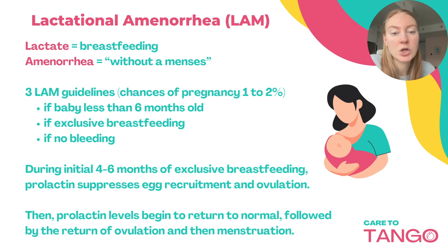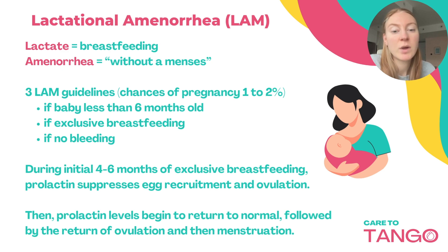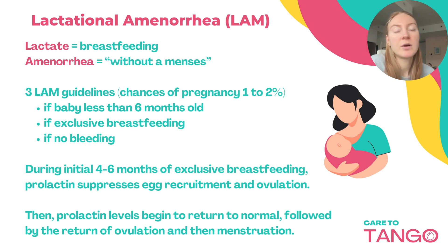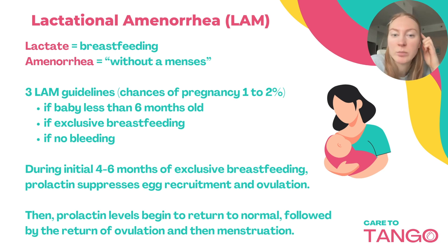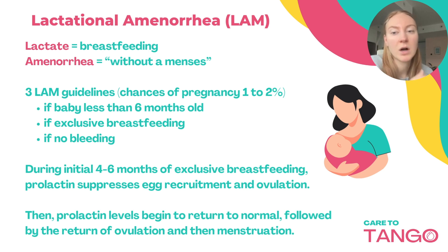Prolactin levels will start to return, followed by the return of ovulation and then the return of menstruation. We really need to be looking out for different cervical mucus patches during this time, because remember that cervical mucus means that estrogen is starting to rise, which would be due to the development of a follicle from FSH in your brain. Pay attention to those cervical mucus days — you might see more and more as you start to return back to ovulatory patterns.